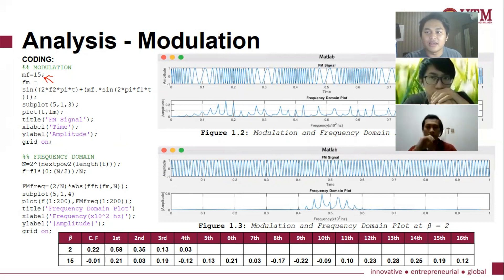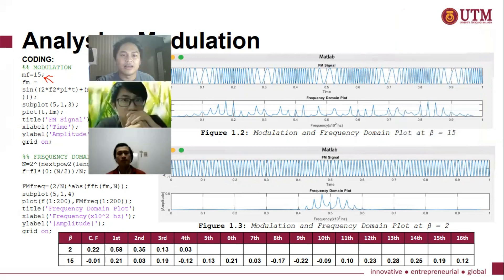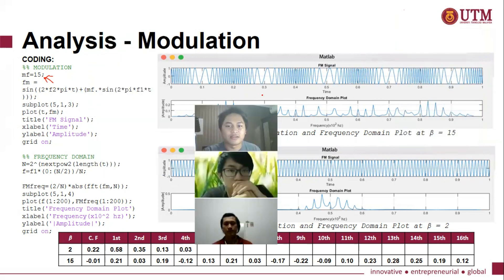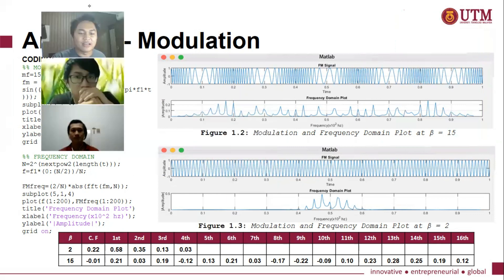As we can see here, when beta is equal to 15, the frequency deviation is more obvious. So this is at beta is equal to 15.